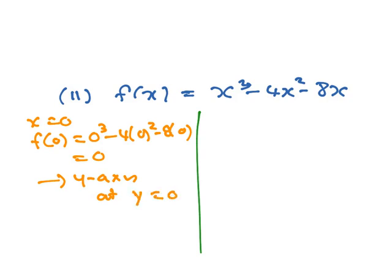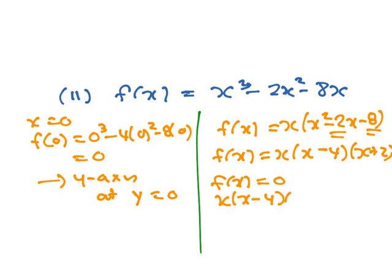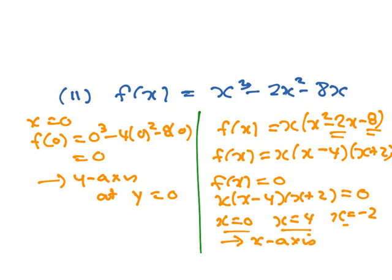And then if you factorize this one, you get x times (x squared minus 2x minus 8) — I'm just going to adjust that number, it should be a 2, it will give you a better factor. So x squared minus 2x minus 8 factorizes to x times (x minus 4) times (x plus 2), because two things multiplying to give minus 8 but adding to give minus 2 are minus 4 and plus 2. When f(x) equals 0, then x(x minus 4)(x plus 2) equals 0. So x equals 0, x equals 4, and x equals minus 2. So it intersects the x axis at 0, 4, and minus 2.